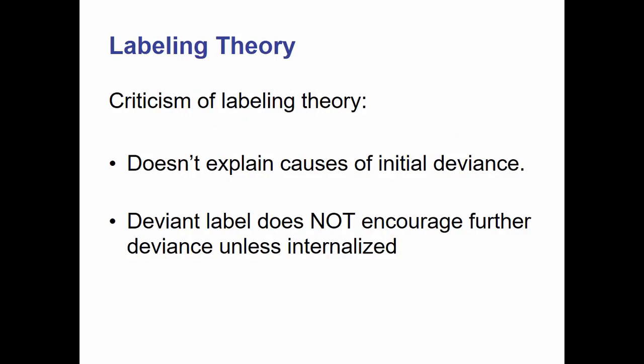Labeling theory is not without its critics. Labeling theory doesn't really explain the causes of initial deviance — that primary deviance. It basically makes the assumption that everyone does deviant things; it's just a matter of who is caught. It also makes the assumption that the deviant label does not encourage further deviance unless internalized. So if someone is thought of as being deviant but doesn't do any further deviant things — the community just thinks he's a weirdo — that's harder to understand in terms of labeling theory.